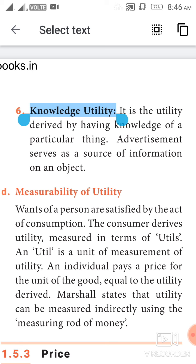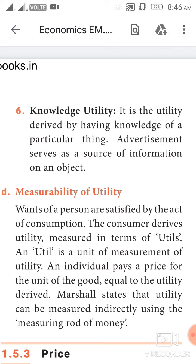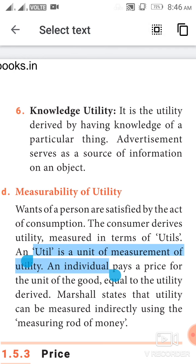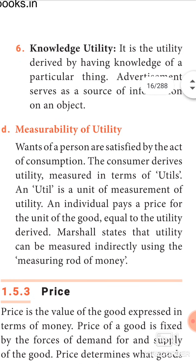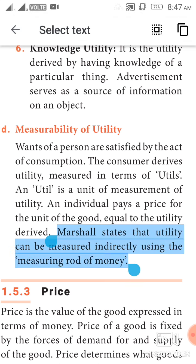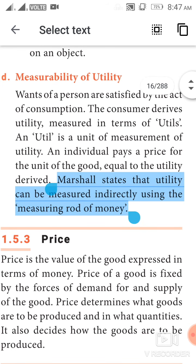Measurability of utility: wants of a person are satisfied by the act of consumption. The consumer derives utility measured in terms of utils, and a util is a unit of measurement of utility. An individual pays a price for the unit of the good equal to the utility derived. Marshall states that utility can be measured indirectly using the measuring rod of money.